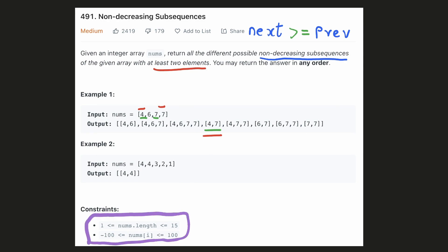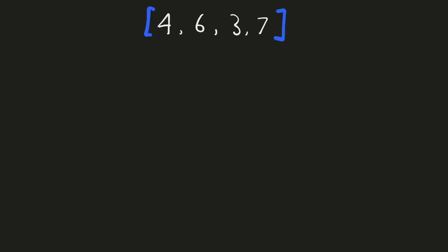We are also given the constraints of this problem and we will see how we can use this. Let's try to come up with an intuitive solution. For each element in the array, we have two choices: whether to include it or not. Similarly, we will have two choices for the second element and so on. So we have n elements and for each element we can make two choices, resulting in 2 raised to the power n subsequences.